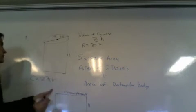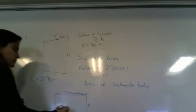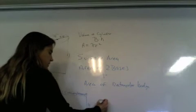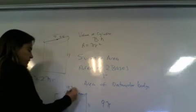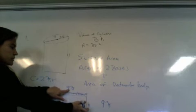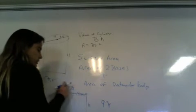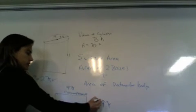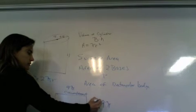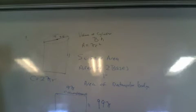2πr. So 9π, right. So the circumference is 9π. So that's 9π. So if I want to find the area of this, it would be? 99π. 9 times 11. Okay, so 99π.